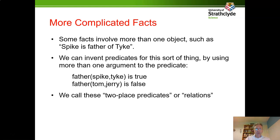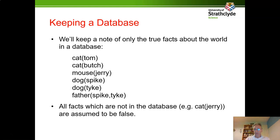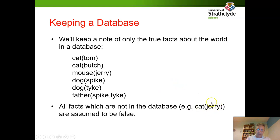Now let's see how we can manipulate our facts. We'll keep a database containing the symbolic versions of true facts. So cat(Tom) is true — we stick it in the database. cat(Butch) is true, mouse(Jerry) is true, dog(Spike), dog(Tyke), and father(Spike, Tyke). Everything else, like cat(Jerry), we don't need to list as false, because everything not in the database is assumed to be false.